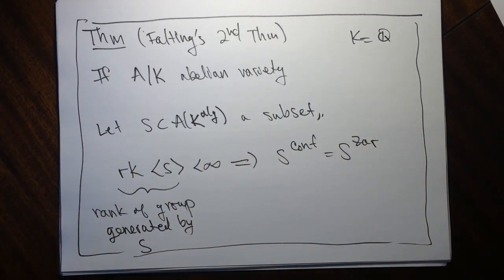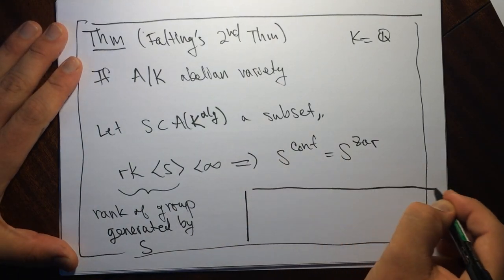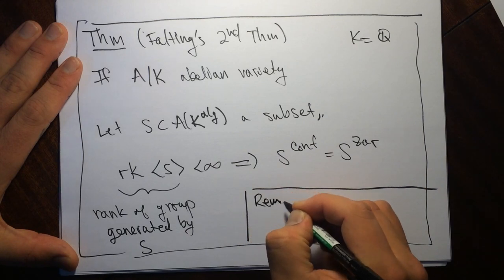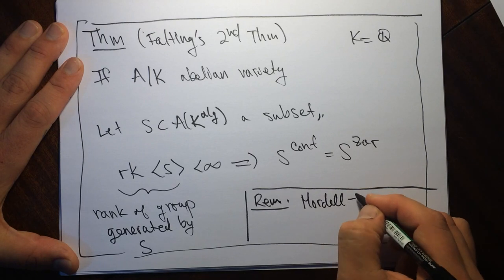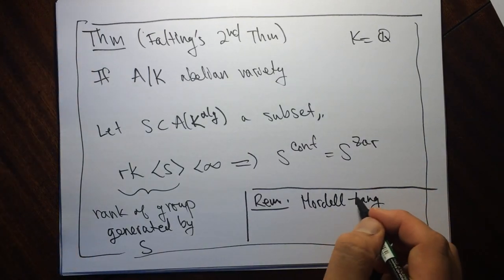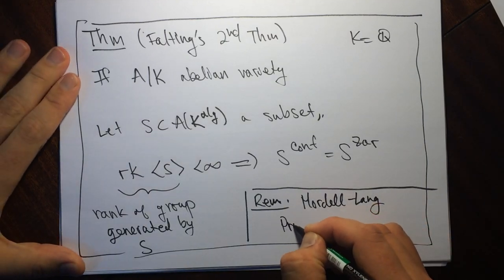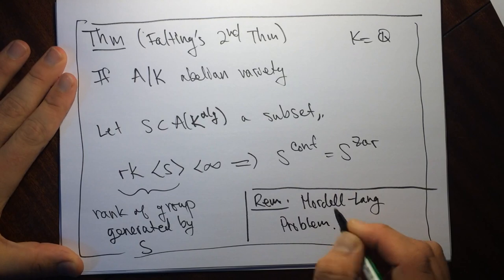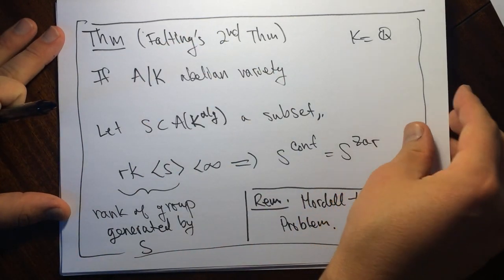This theorem was conjectured by Mordell, and the generalization was due to Lang, so sometimes this is called the Mordell-Lang problem. The Mordell-Lang problem was solved by Faltings. I'm now going to explain how this theorem implies the other theorem — the Mordell theorem.